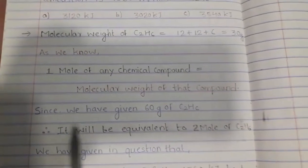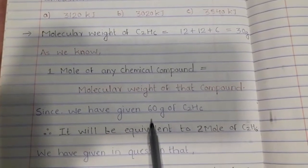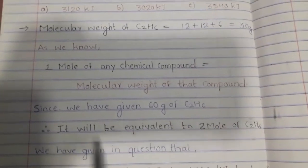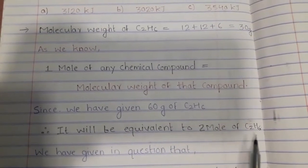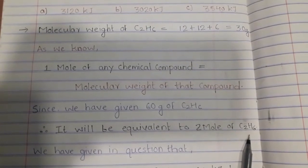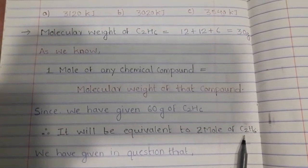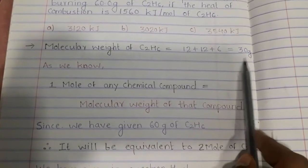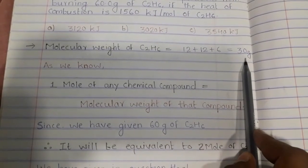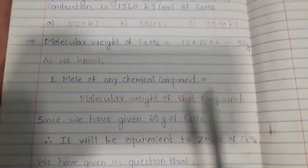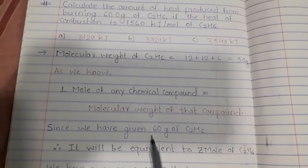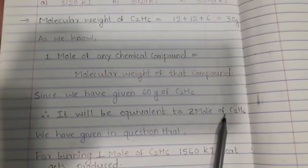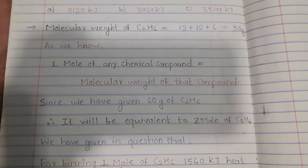Since we have been given 60 grams of ethanol, the molecular weight of ethanol is 30 grams, and 30 grams is equivalent to 1 mole. Therefore, 60 grams will be equivalent to 2 moles of ethanol. So here we have 60 grams of ethanol which equals 2 moles of ethanol.